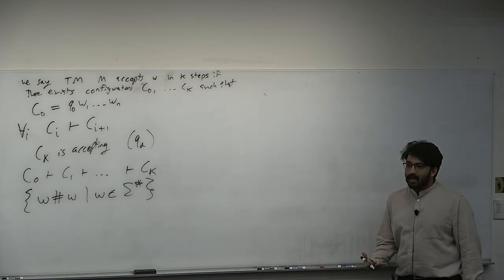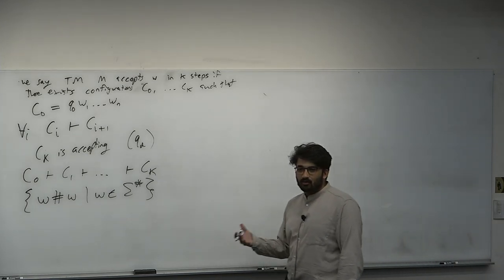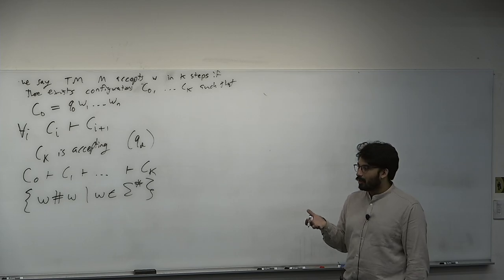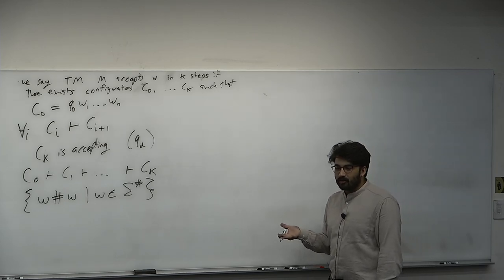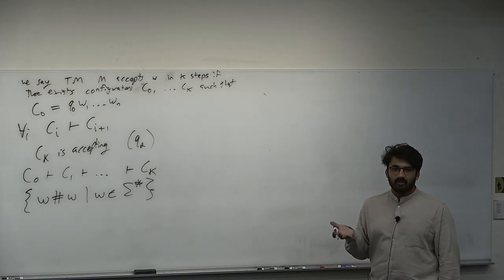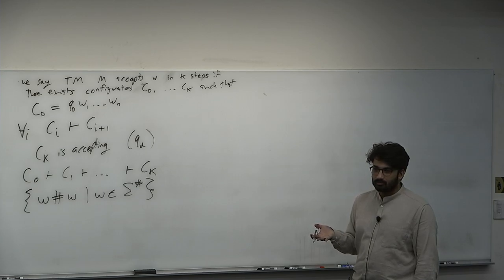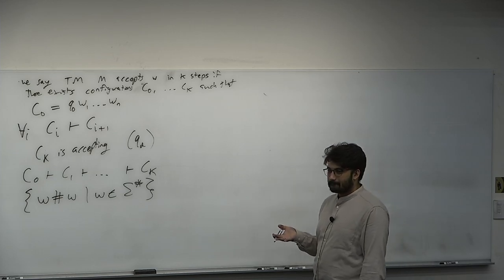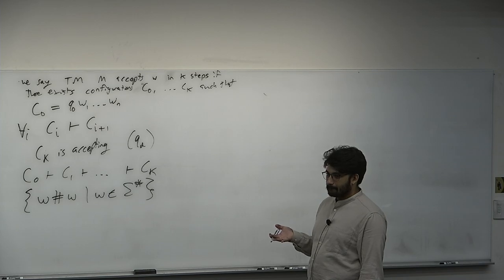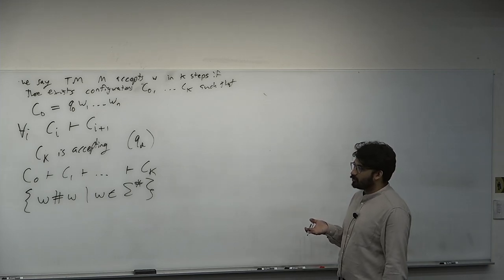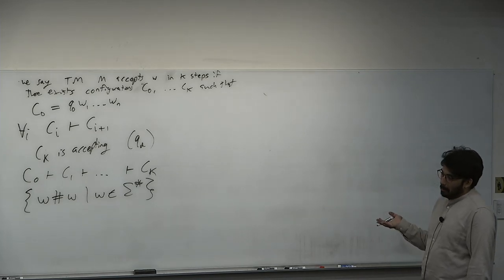When we did PDAs, we first gave a high-level algorithm then turned it into a state diagram. Let's do the same here. Given a string of the form W#W, how would you determine it? Check a letter, move past the pound sign, check the letter again, keep bouncing back and forth — the hash tells you what's happening. That's almost too simple to explain because a computer would do that automatically, but that's what we do here.